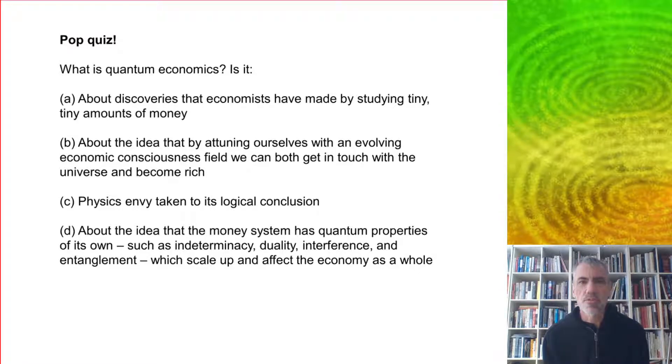Okay, so pop quiz. What is quantum economics? Is it, a, about discoveries that economists have made by studying tiny, tiny amounts of money? No. b, about the idea that by attuning ourselves with an evolving economic consciousness field, we can both get in touch with the universe and become rich? No, unfortunately. c, physics envy taken to its logical conclusion? No, there is a danger of that, but as we'll see, the rest of these talks really don't touch on physics very much at all. Or d, about the idea that the money system has quantum properties of its own, such as indeterminacy, duality, interference, and entanglement, which scale up and affect the economy as a whole. And the correct answer is, of course, d.